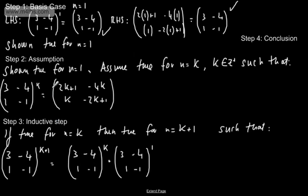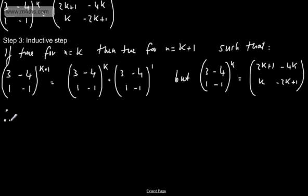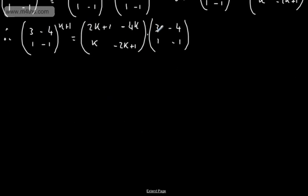From our assumption, (3, -4; 1, -1)^k equals (2k+1, -4k; k, -2k+1). So we substitute that in: (3, -4; 1, -1)^(k+1) equals (2k+1, -4k; k, -2k+1) multiplied by (3, -4; 1, -1). We're now going to multiply these two matrices — it looks like a complete mess, but we just work through it row by column.